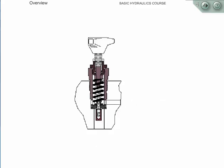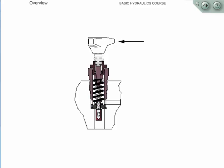A direct acting relief valve is one in which the poppet is held closed by the direct force of a mechanical spring, which is usually adjustable. Spring tension is set on the knob to keep the poppet closed until system pressure working against the poppet reaches the desired cracking pressure. When the system pressure reaches full relief value, all fluid is passed across the poppet to the tank passage.